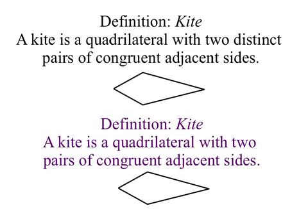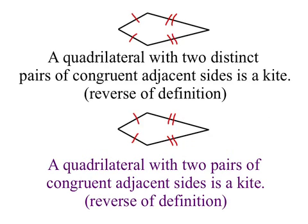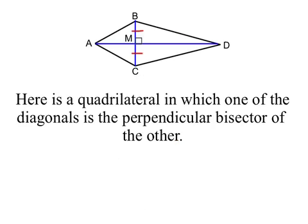Now let's look at kites. There are two definitions for a kite. A kite is a quadrilateral with two distinct pairs of congruent adjacent sides, or a kite is a quadrilateral with two pairs of congruent adjacent sides — in the second definition, they don't have to be distinct pairs. The reverse of each definition proves a kite. In the bottom definition, the two pairs do not have to be distinct; they just happen to be in the sketch.